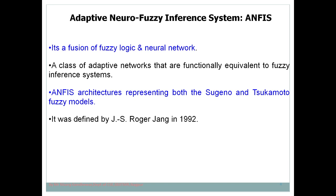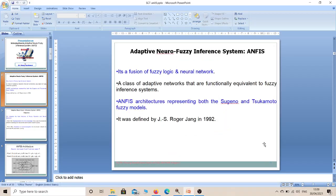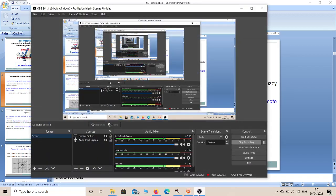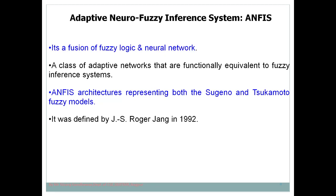In an artificial neural network, we have an input layer, hidden layer, and output layer. The input layer receives inputs, the hidden layer contains neurons responsible for processing the data, and the output layer produces the final output. The fuzzy inference system is used for decision making while the neural network is used for learning.